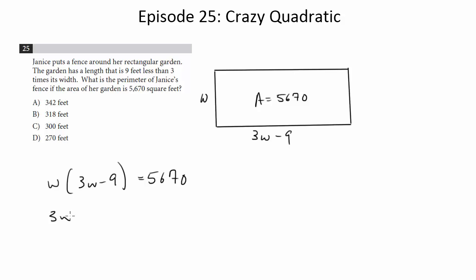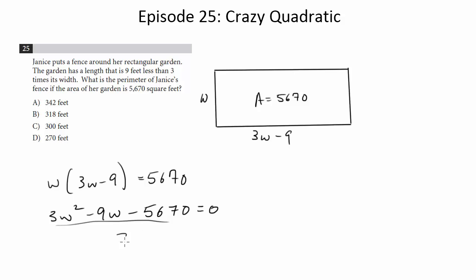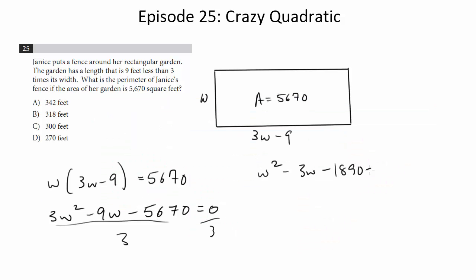Now we'll distribute 3w, and I'm going to bring the 5,670 over by subtracting 5,670 from both sides. So I get this, and I believe 5,670 is divisible by 3. It is, so I'm going to divide both sides by 3, just to simplify this a little bit.